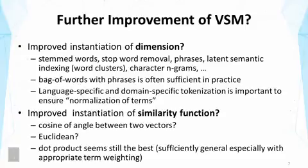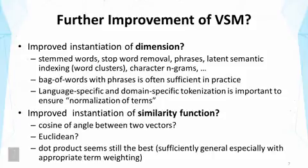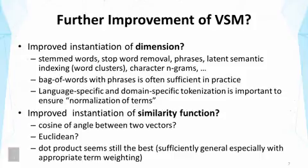For example, stemmed words — words that have been transformed into the same root form — so that 'computation' and 'computing' will all become the same and can be matched. We can do stop word removal to remove very common words that don't carry content, like 'the' or 'of.' We can use phrases to define dimensions, or even use latent semantic analysis to find clusters of words representing a latent concept as one dimension. We can also use smaller units like character n-grams. However, in practice, people have found that the bag-of-words representation with phrases is still the most effective and efficient approach, and it's used in all the major search engines.